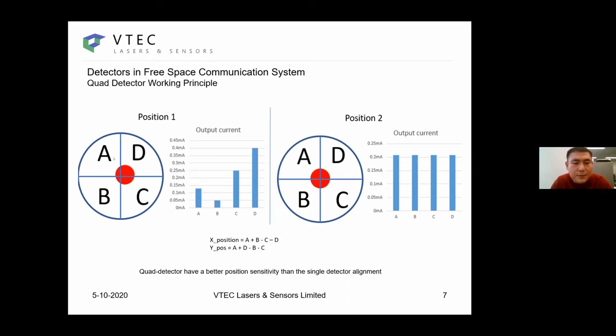This approach is considered to be better than single detector beam alignment. Because when we have a collimated beam that is hitting in the middle of the active area, we will not have any changes in output current of a single detector.